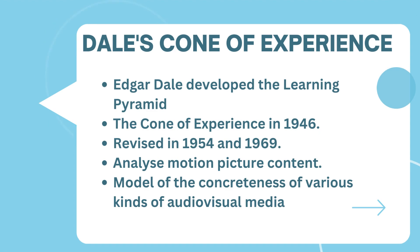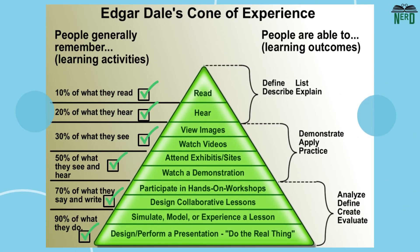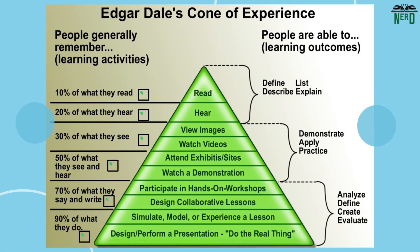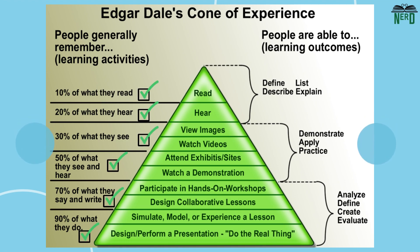This diagram you see here is often called the Cone of Learning. It purports to tell viewers how much information people remember based on how they encounter it. Repeated in thousands of iterations, the omnipresent learning cone diagram states that people remember: